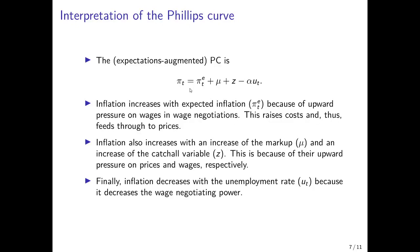We have this basic expectations-augmented Phillips curve, where the inflation rate is determined by three components. First, the expected inflation rate: if people expect high inflation, they would want to bargain for higher wages, which increases production costs for firms and in turn increases prices. Second, inflation also increases with an increase in the markup or the catch-all variable z, because this increases the market power of firms or the negotiation power of labor unions, leading to higher wages and upward pressure on prices. Finally, inflation decreases in the unemployment rate, because high unemployment reduces labor unions' wage negotiating power and therefore leads to downward pressure on costs.